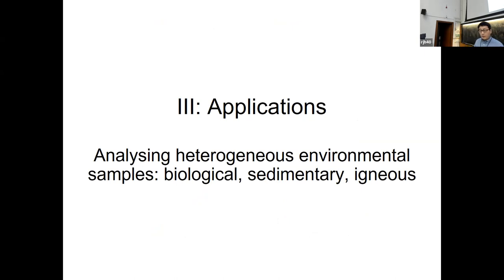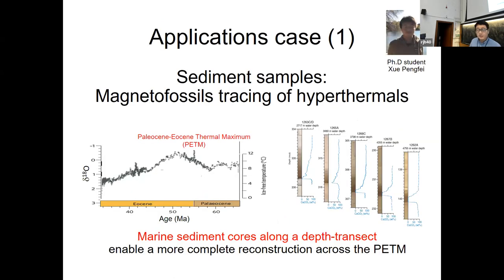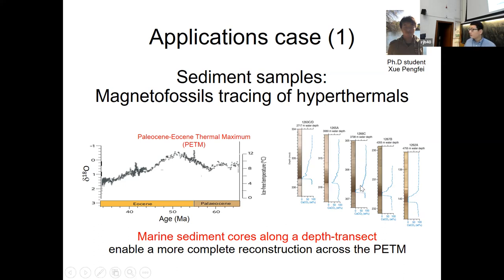Very quickly, I want to share some applications to dirty samples. The first sample is moraine sediments. We're interested in the Paleocene-Eocene Thermal Maximum, or PETM, which is a global warming event 55 million years ago. This sample contains almost pure magnetofossils. We have ocean sediment cores from different water depths, and we counted thousands and thousands of particles. For each sample, they change — we can see the particle size and shape change using direct imaging.